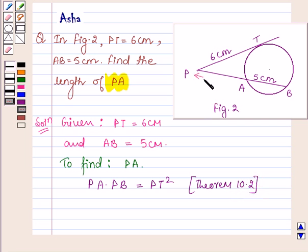So here let us take PA is equal to x cm. So on substituting the values here, we have PA is equal to x into PB is x plus 5 is equal to PT square and PT is 6.